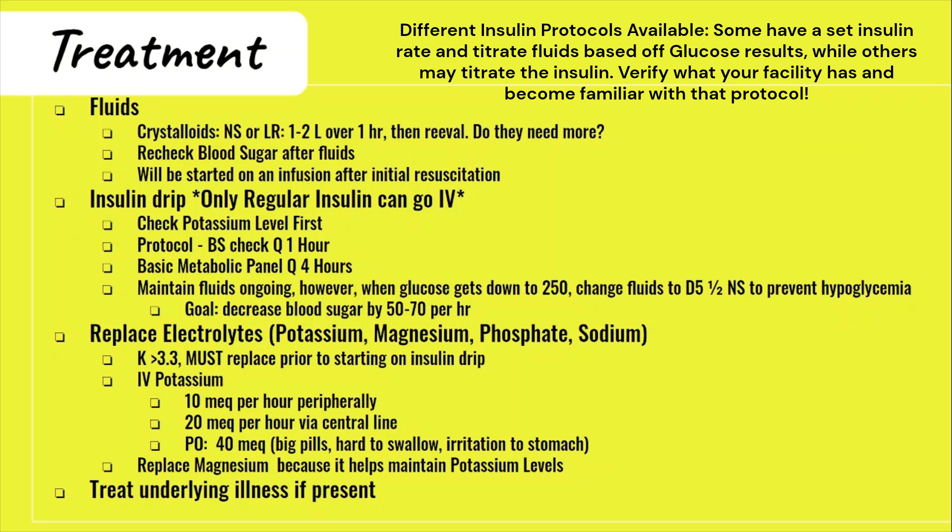Once your blood sugar gets down to 250 while the patient is on the insulin drip, you will be changing the fluids to D5 1/2 NS with or without potassium inside, depending on the patient's potassium level. You change it to D5 1/2 NS to give your patient some glucose to prevent them from going hypoglycemic. Just because the blood sugar is going down doesn't mean the ketones issue is resolving — which is why patients still remain on the insulin drip, and why we check the gap every four hours. The patient will remain on insulin until the ketones issue is resolved and the gap closes below 12.